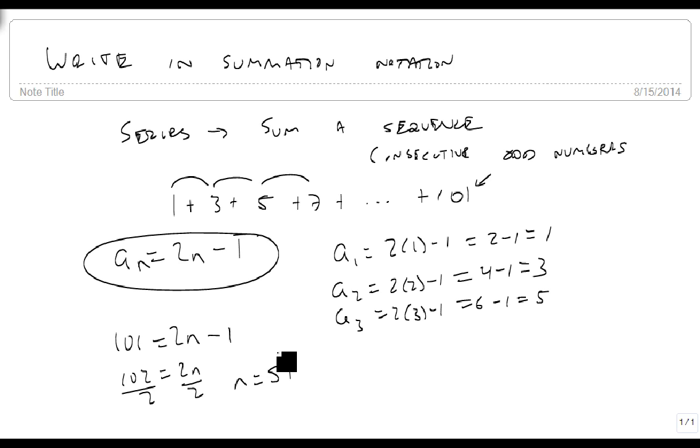So now we know our upper bound and we know our lower bound, and so what we get is the sum, as i goes from 1 to 51, of 2n minus 1. Notice the parentheses, so the sum goes to the whole thing, and this is our answer. This is our summation notation. It has the right lower bound, the right upper bound, and the right a sub i term.